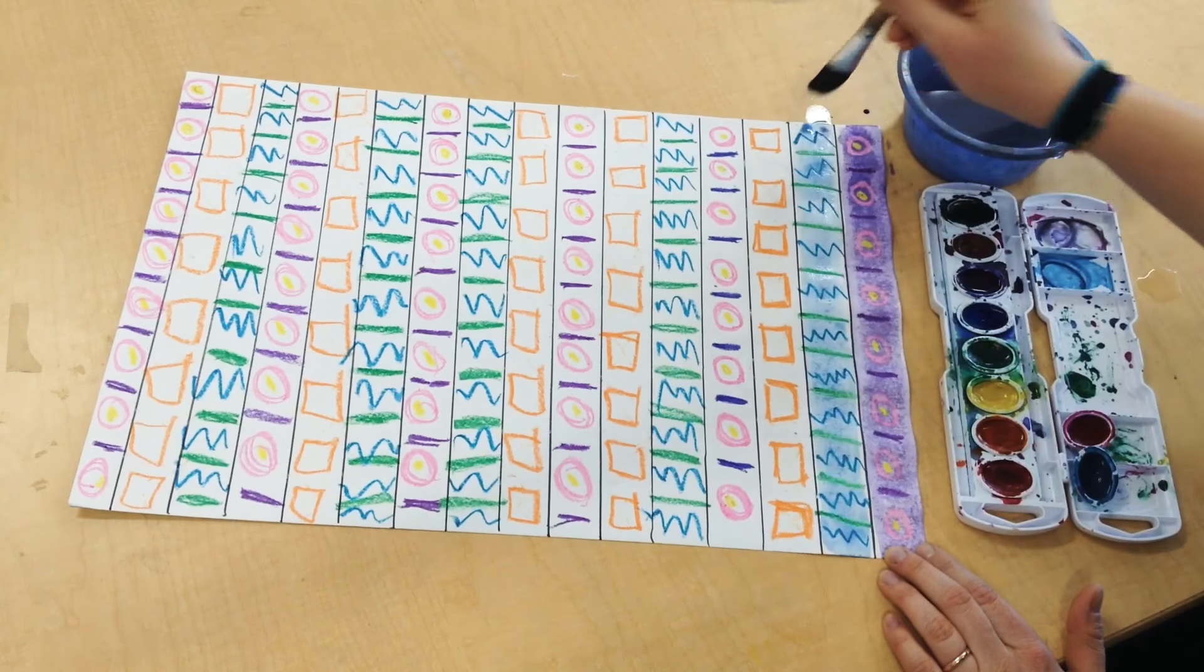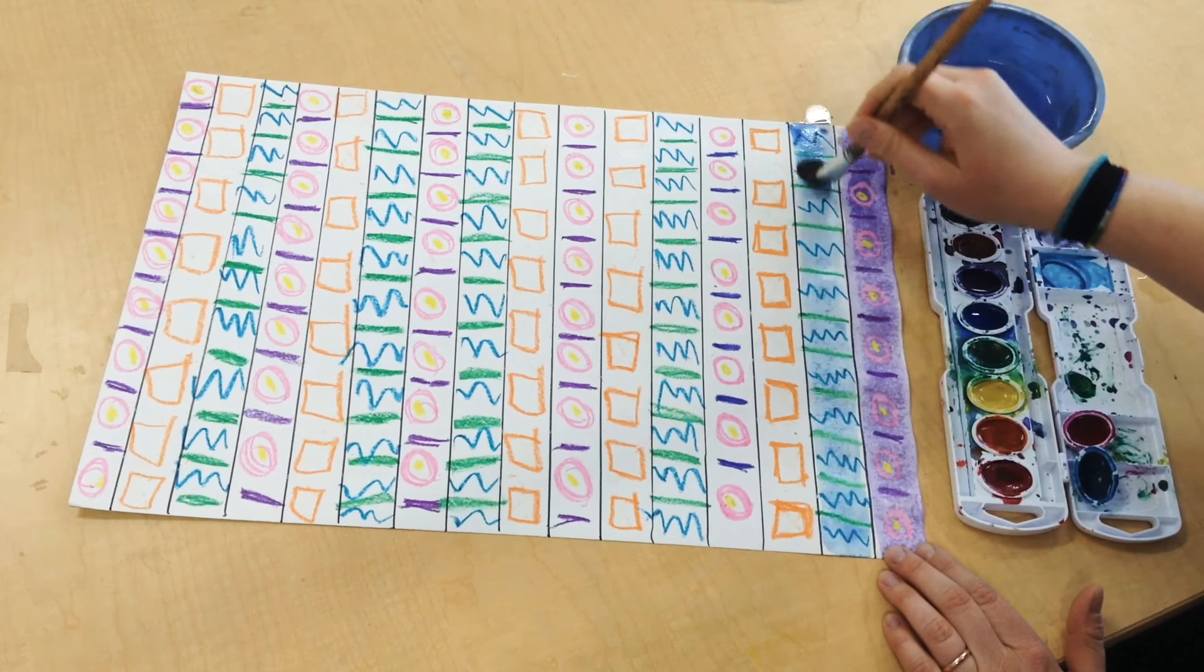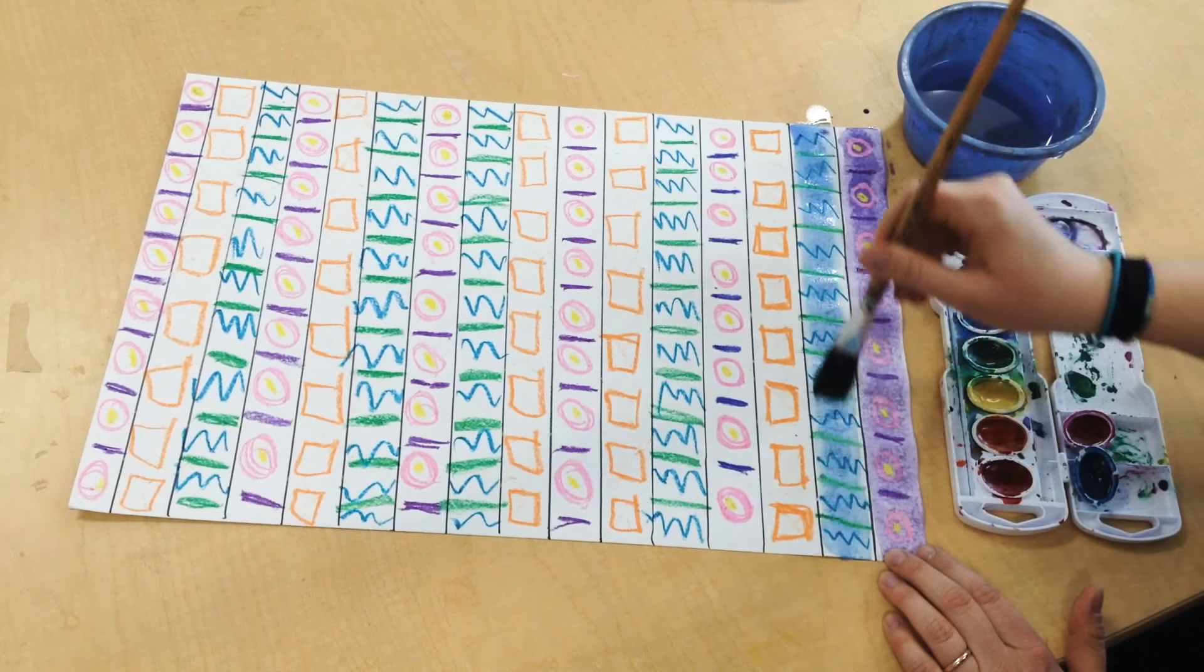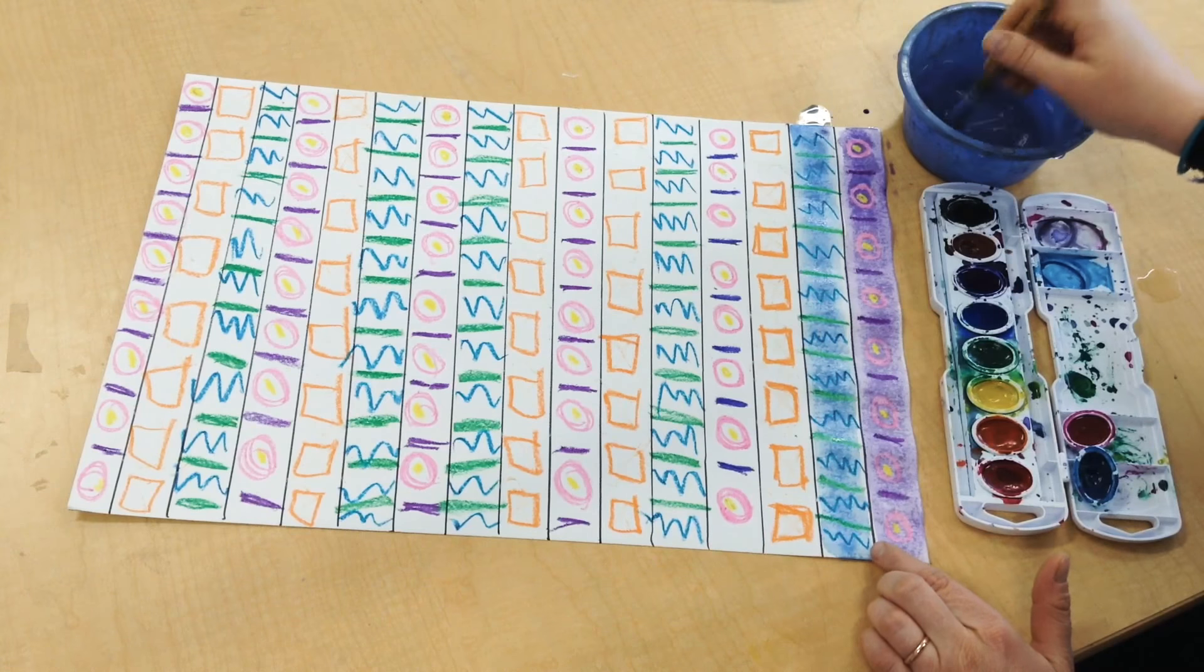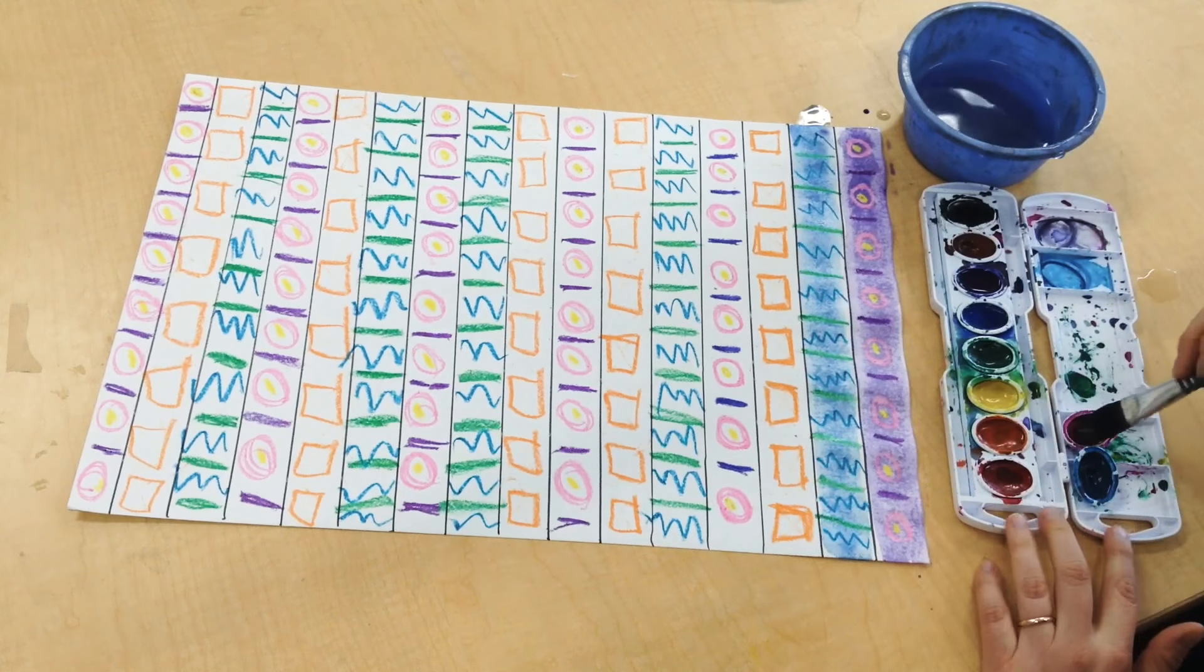As I'm painting, I'm going to try not to paint on my line because that's going to help keep my colors from blending together. So you can leave a little bit of space between those colors.